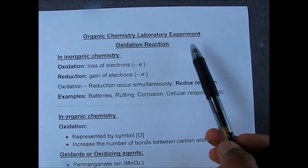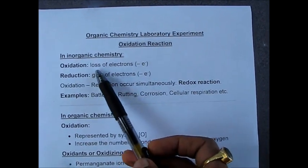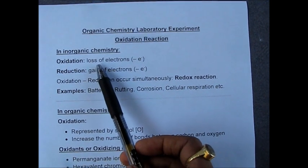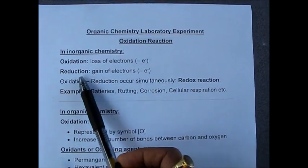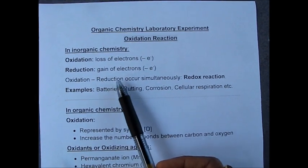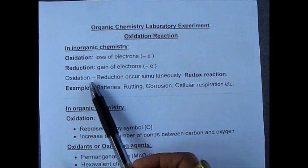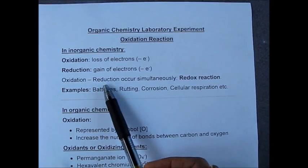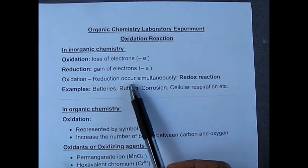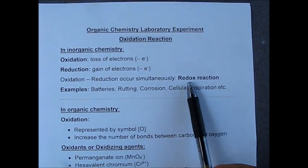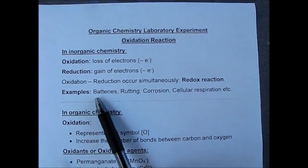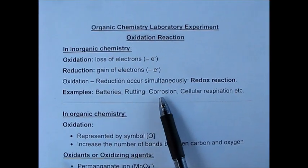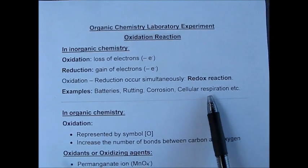In inorganic chemistry, we understand oxidation as the loss of electrons and reduction as the gain of electrons. Usually in inorganic chemistry, oxidation and reduction occur simultaneously — this is called the redox reaction. Examples include batteries, rusting of iron, corrosion of metals, and cellular respiration.